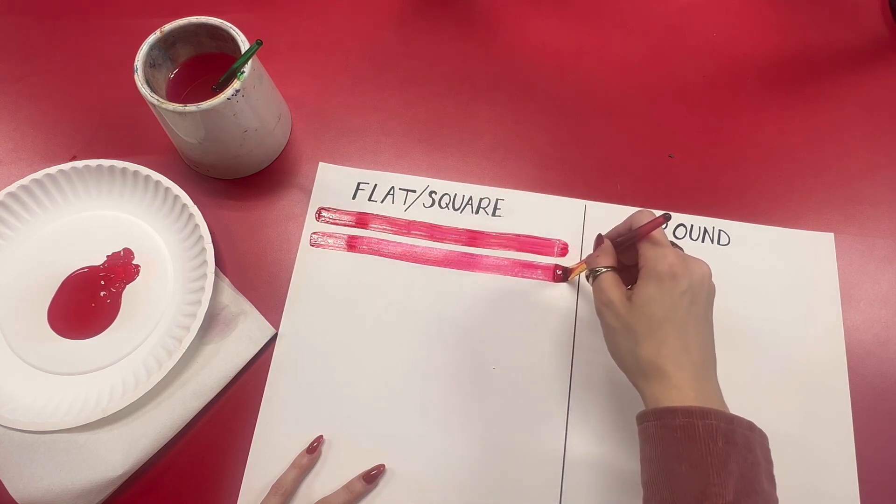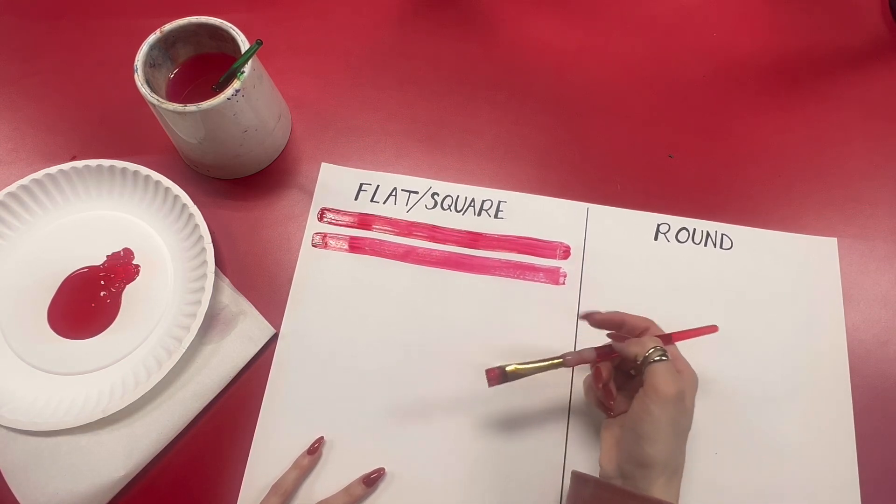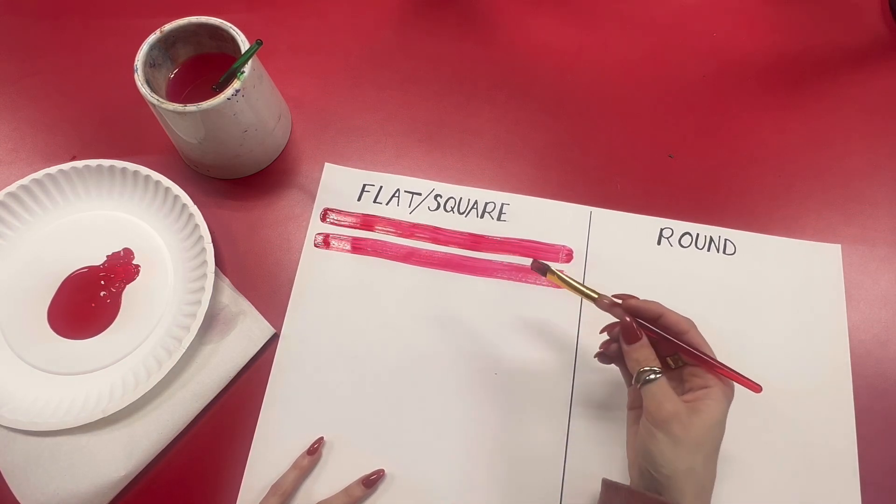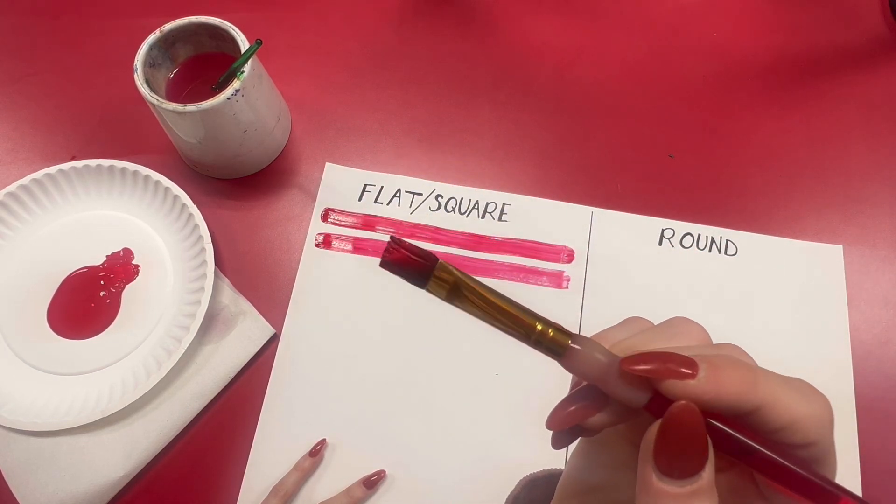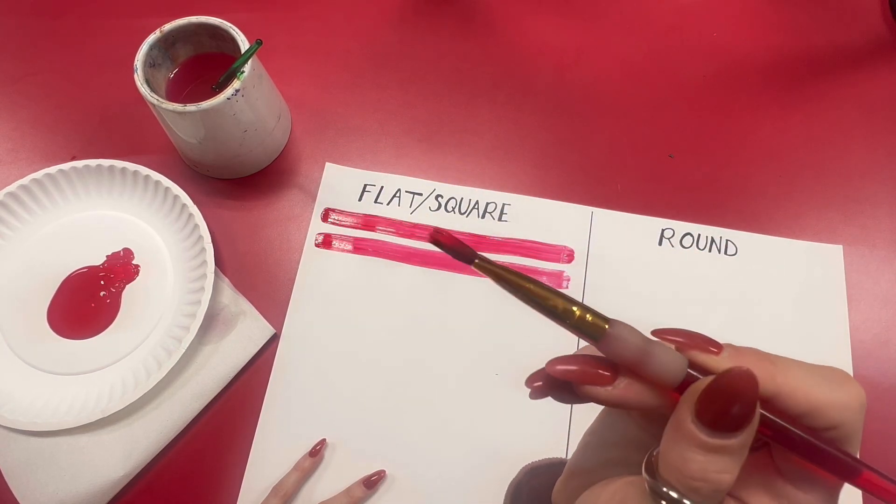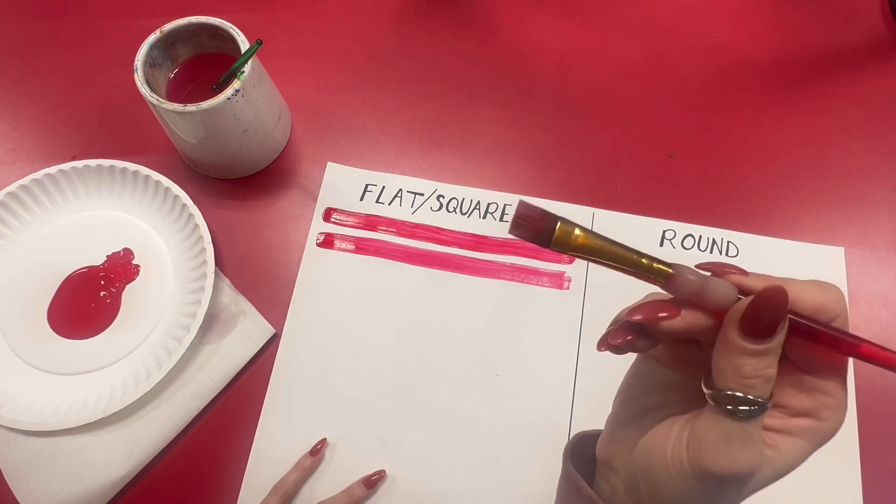Now you're going to notice after a couple strokes the paint is going to start to look dry. That's going to tell you you either need more paint or you need to flip it over. So if I look at the paint on my brush there's more paint on this side than the other side. So I can either go back and get some more paint or I can just flip my brush over.